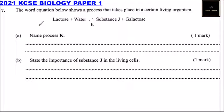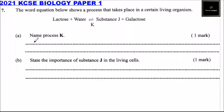Question number 7. The word equation below shows a process that takes place in a certain living organism. We have lactose plus water — a reversible process — giving substance J plus galactose. Name the process K. Process K is known as condensation.